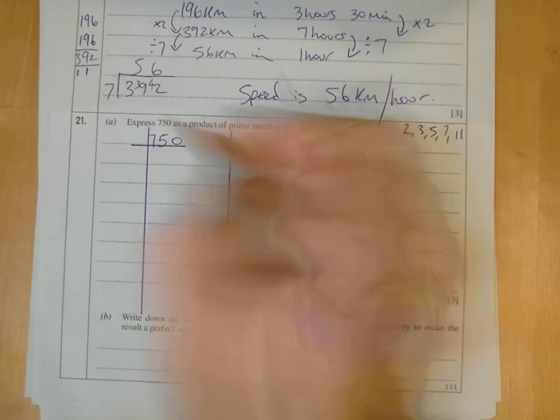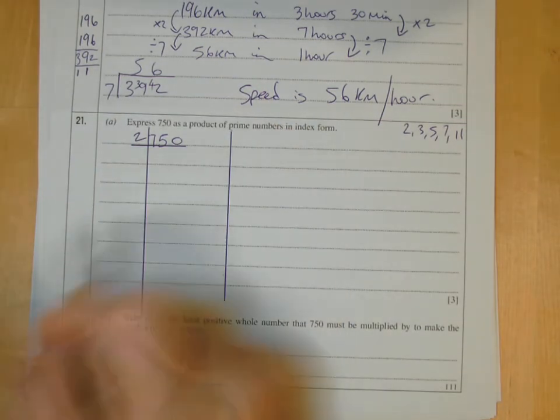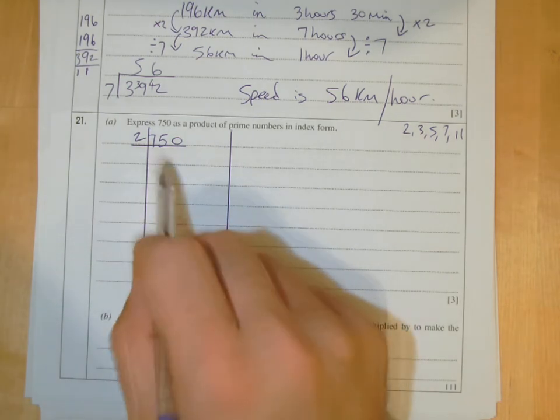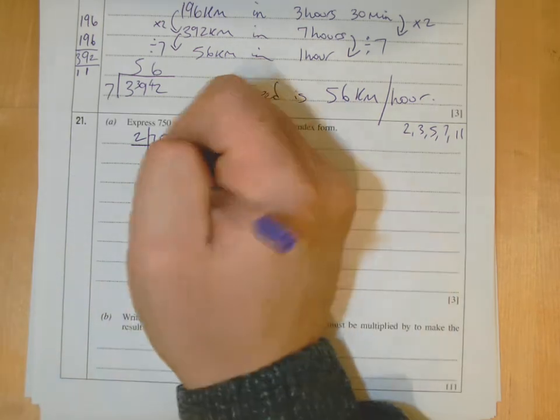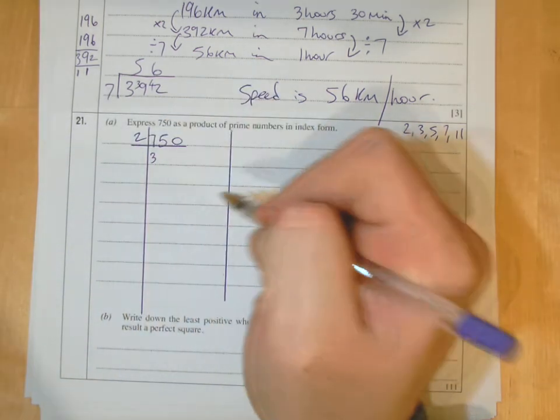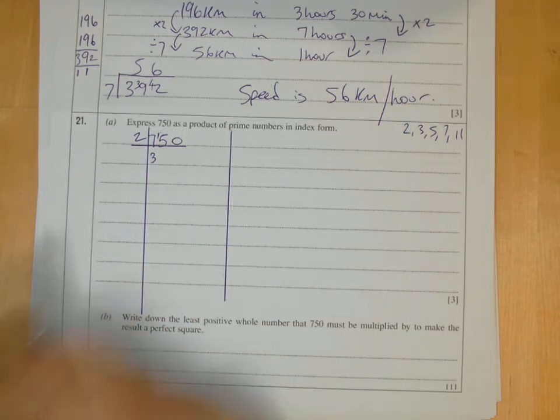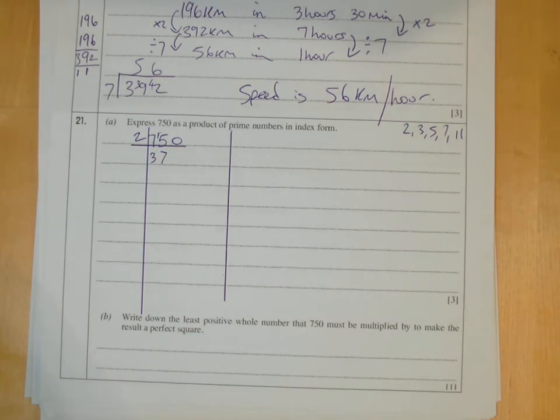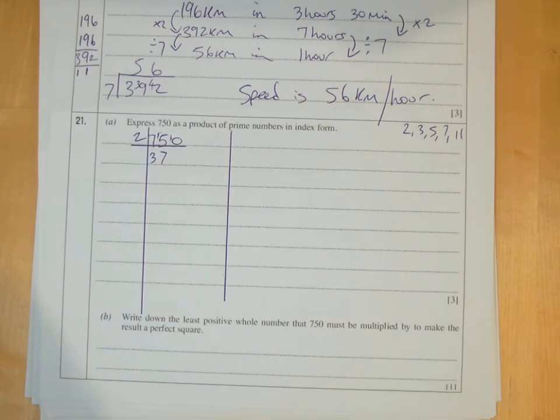When you see 750, straight away I'm thinking 2, because it's even, ends in zero. So what you do then is you do like the bus stop method but upside down. So 2 into 7 goes 3 times, that gives me 6, there's 1 left over so I write that there. 2 into 15 goes 7 times, but 2 times 7 is 14 so there's 1 left over. 2 into 10 goes 5 times exactly, 375.